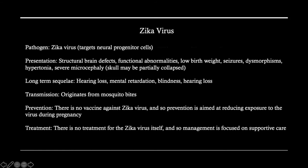The Zika virus targets neural progenitor cells and can lead to microcephaly — a malformation of the skull leading to a smaller head size. Functional abnormalities, structural brain defects, and dysmorphisms may be seen, making it very concerning especially for a pregnant woman. Long-term consequences include hearing loss, blindness, and neurological deficits. It originates from mosquito bites, and as there is no vaccine, pregnant women should reduce exposure by not traveling to areas with known Zika transmission. Management is supportive care if a positive disease state is identified in a neonate.